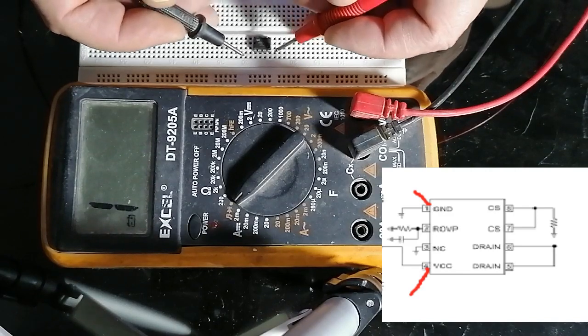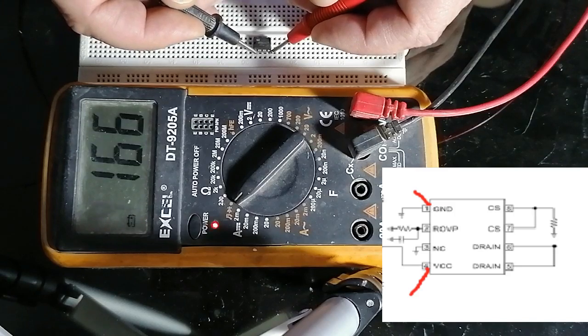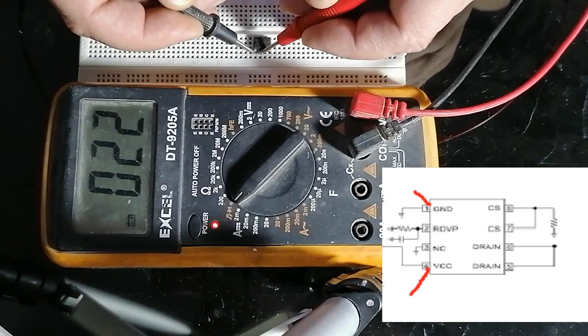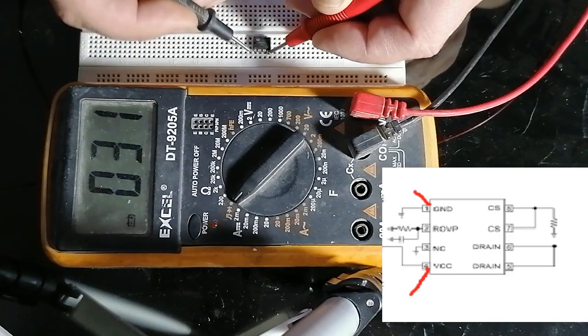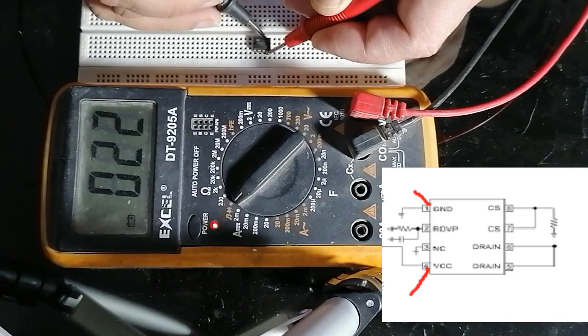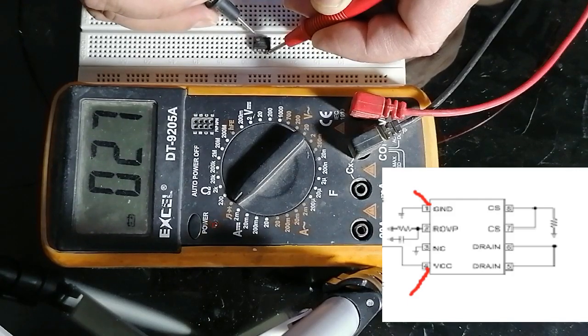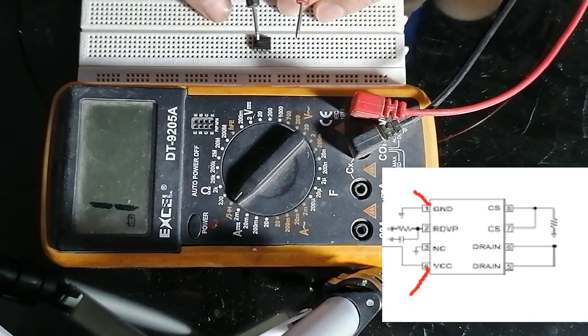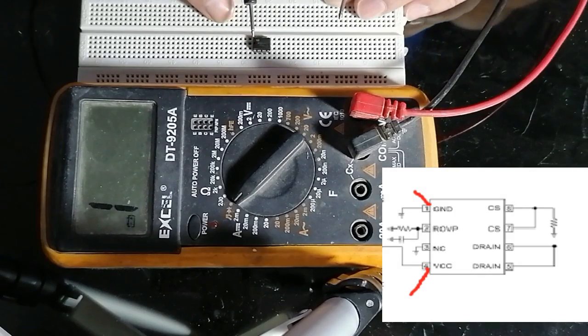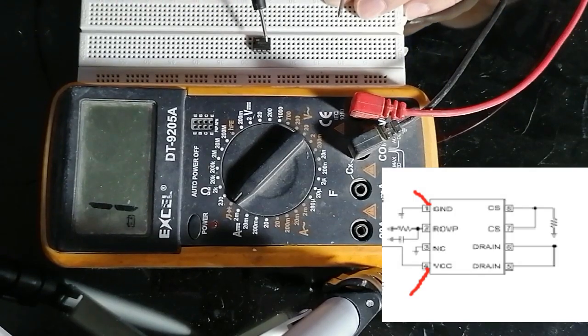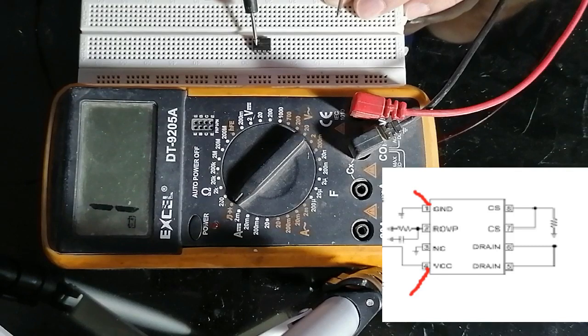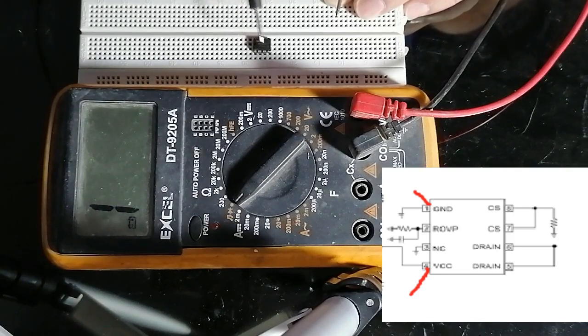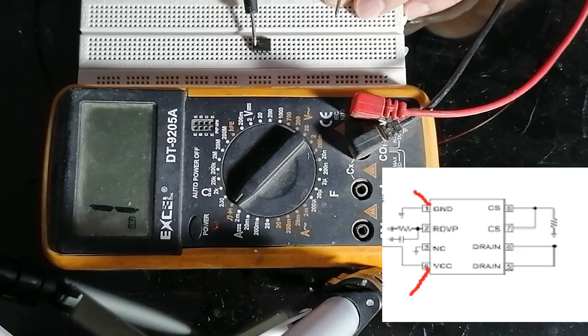So I come here to test. As you see, it's reading short. If I check with this pin, also short. This pin, short. This pin, short. This pin, short. Now, what I decide: when the VCC pin and ground pin read short and the voltage is high, what does that mean? That means this IC is damaged and needs to be replaced.